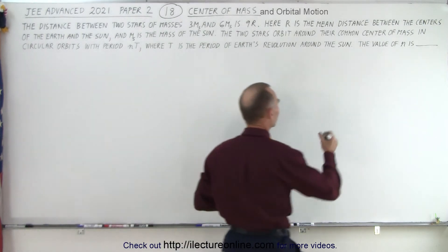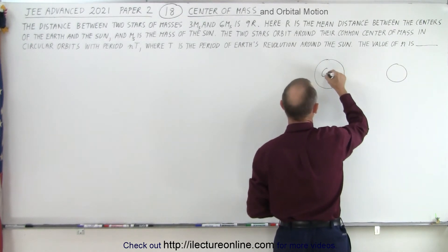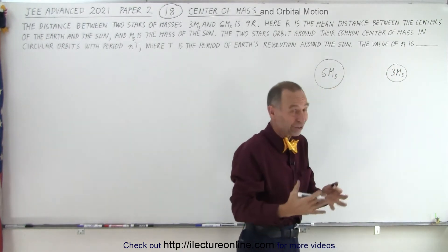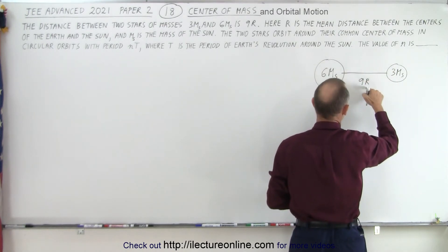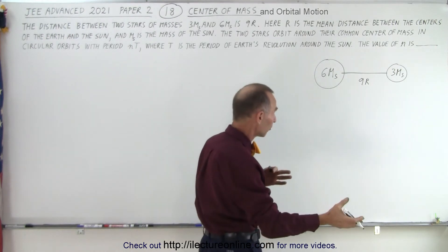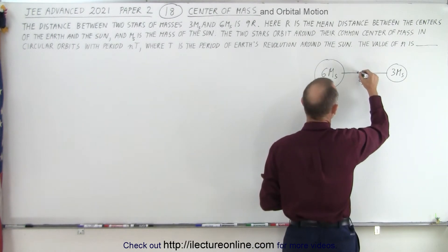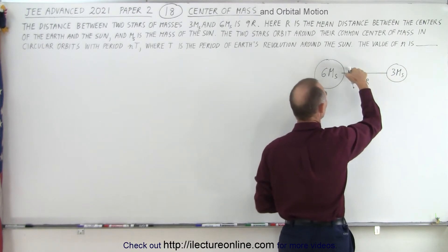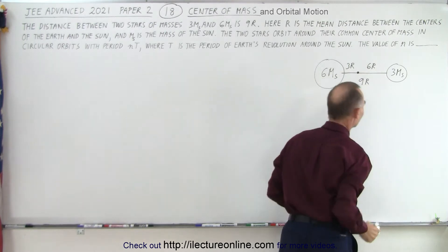Let's make a quick drawing. We have a bigger star and a smaller star. The big star has mass 6 times the mass of the Sun, and the smaller star is 3 times the mass of the Sun — which still makes it a big star, of course, because it's bigger than our Sun. The distance between the two is 9r, r being one astronomical unit, or the distance between the Earth and the Sun. The common center of mass will be closer to the large star, and since this star is twice the size of the other, the distance to the center of mass should be half as big. So this becomes 3r, and this becomes 6r, adding up to 9r — and 3r is half of 6r.